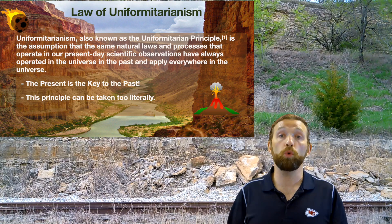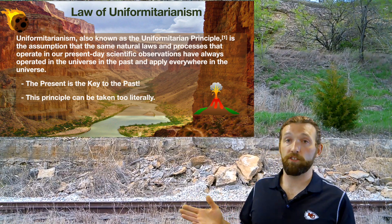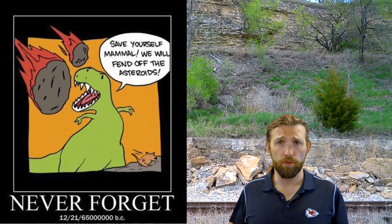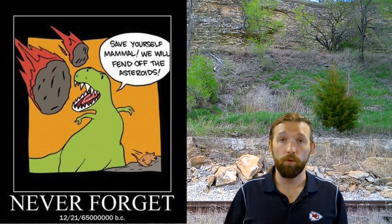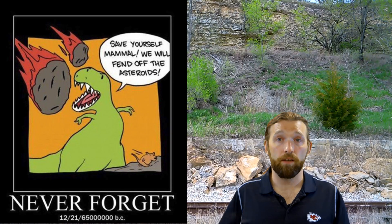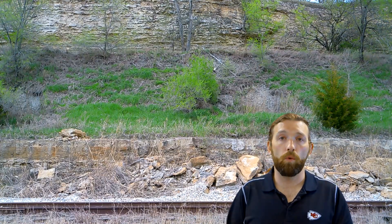Now this can be taken too literally. Right now we're not experiencing any cataclysmic events, and you could use the idea of uniformitarianism to basically pretend that cataclysmic events don't happen. But we do have evidence of those cataclysmic events in Earth's rock layers — in the history book of Earth. So we know that cataclysmic events happen, and therefore we don't take the law of uniformitarianism to its most extreme.